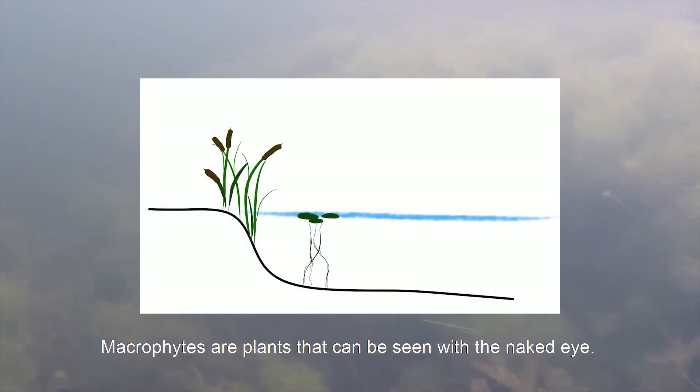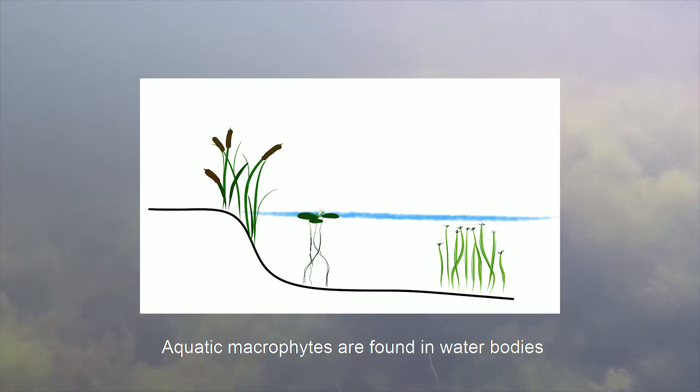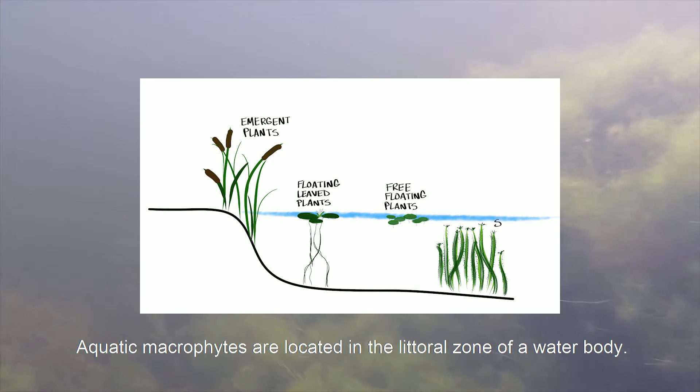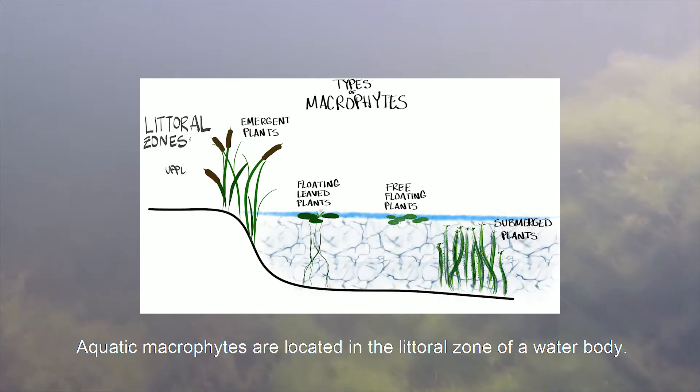Macrophytes are plants that can be seen with the naked eye. Aquatic macrophytes are found in water bodies either along the shoreline or fully submersed. Aquatic macrophytes are located in the littoral zone of a water body.